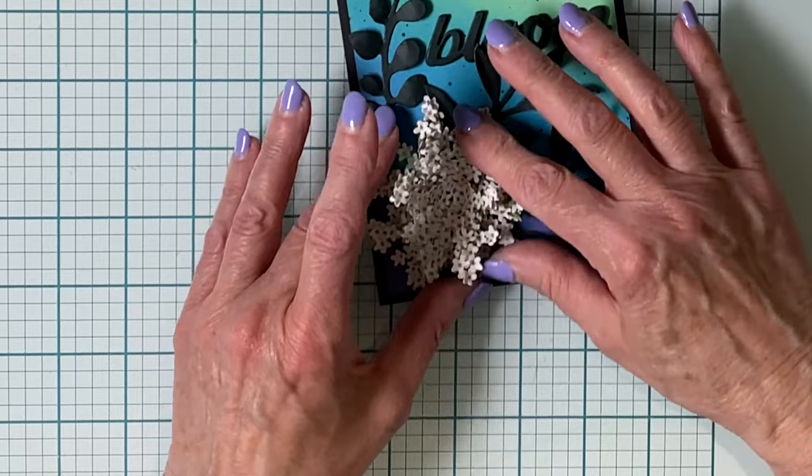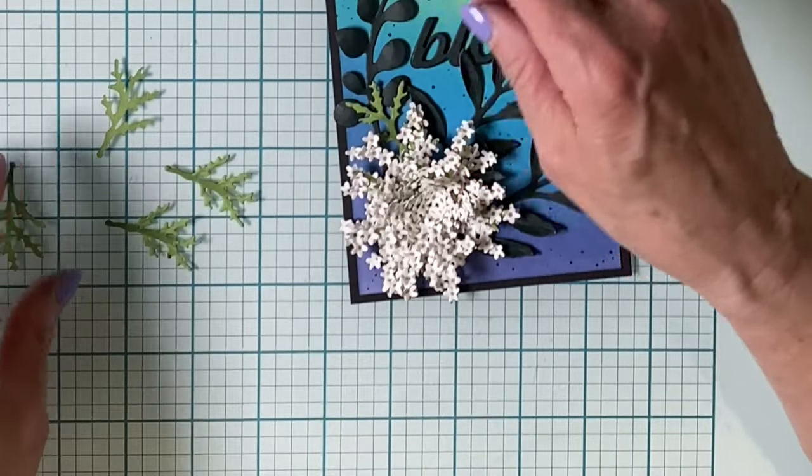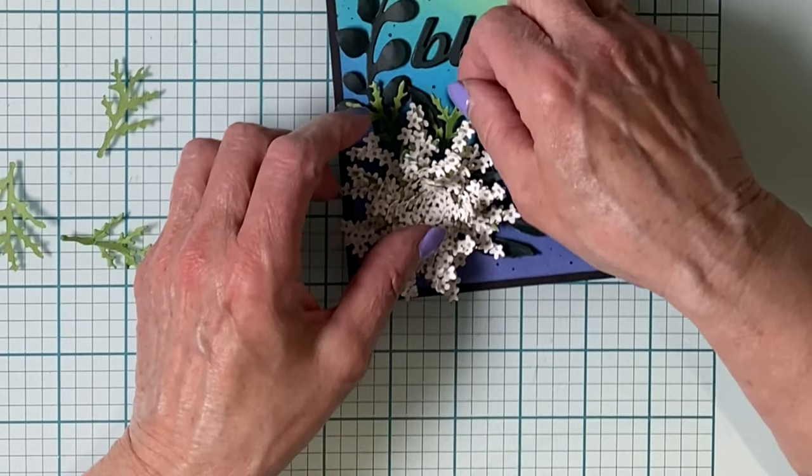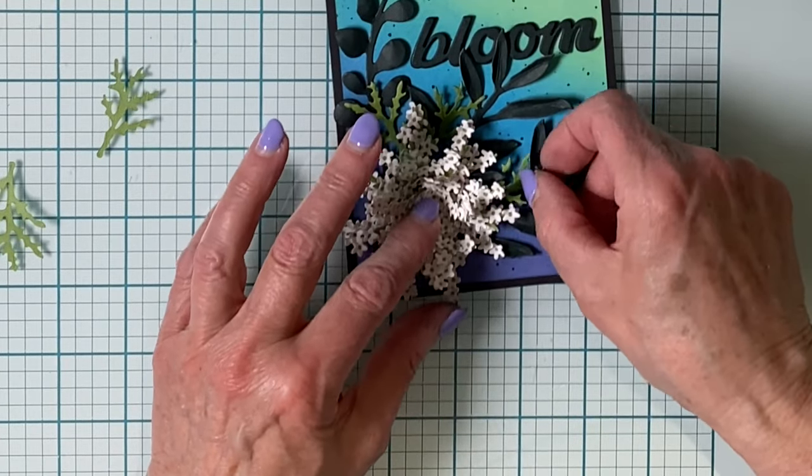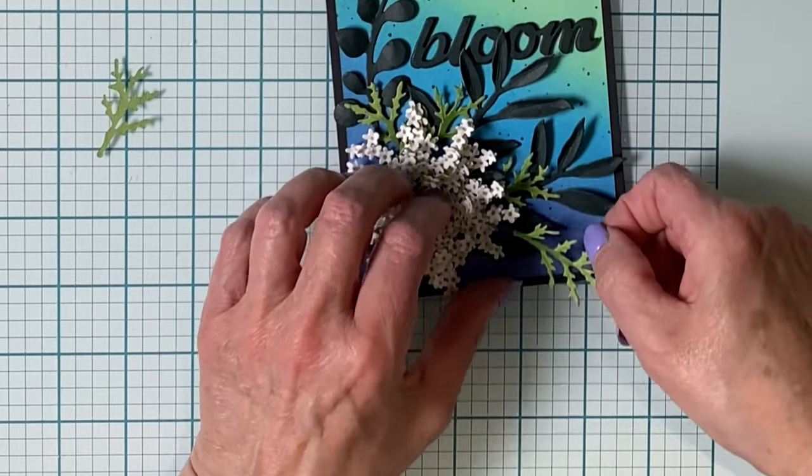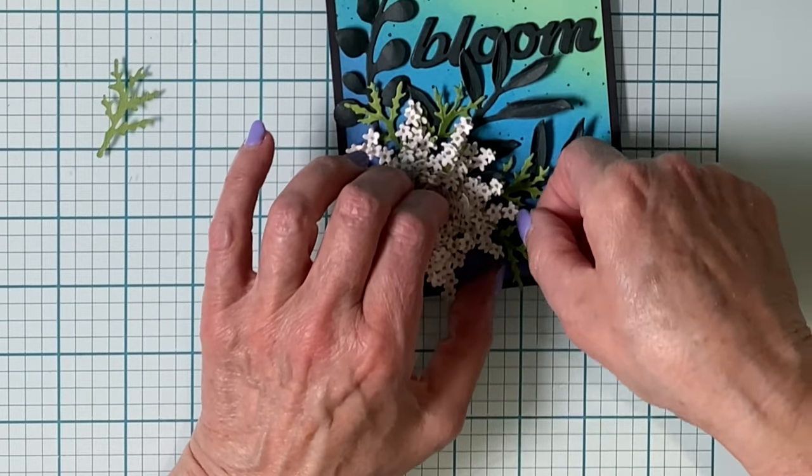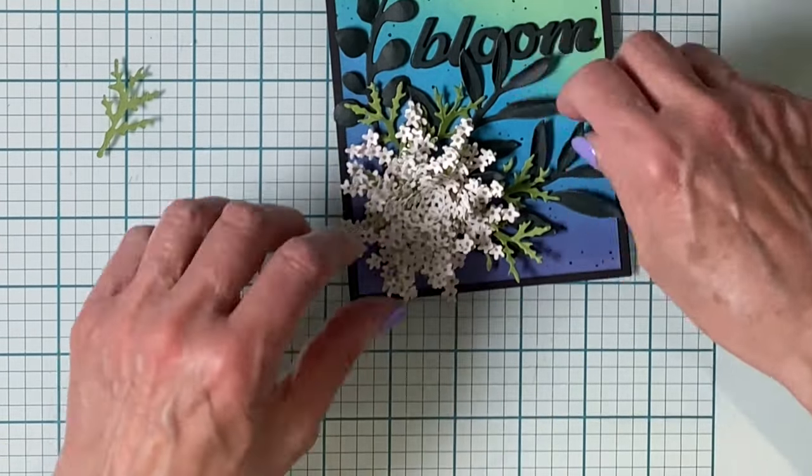I'll just give it a couple of minutes for that glue to start setting up before I start adding in the leaves. Because the adhesive was applied to the central part of the base, I'm able to easily slip those leaves under the clusters of flowers.